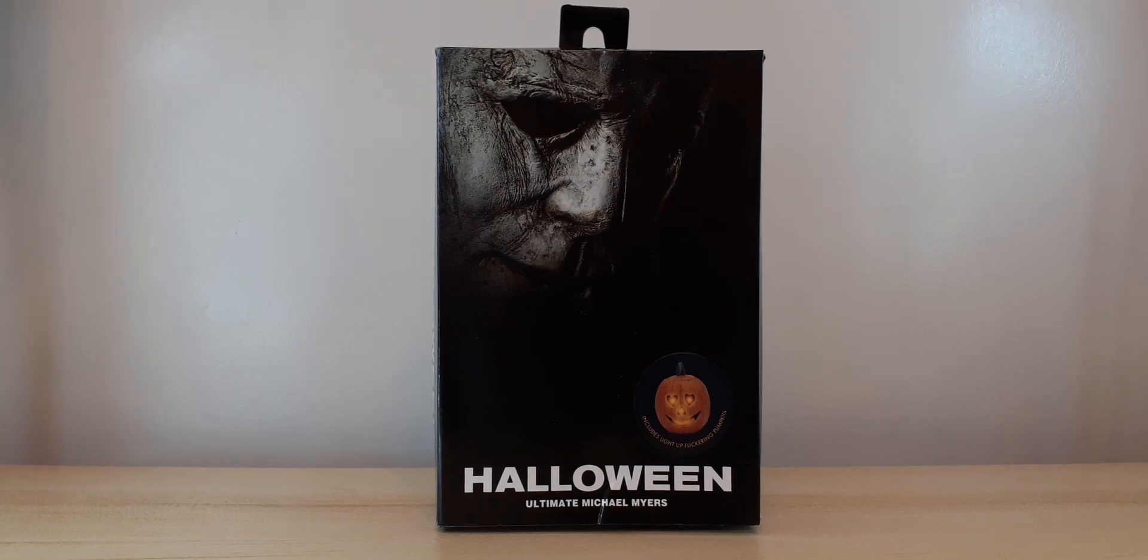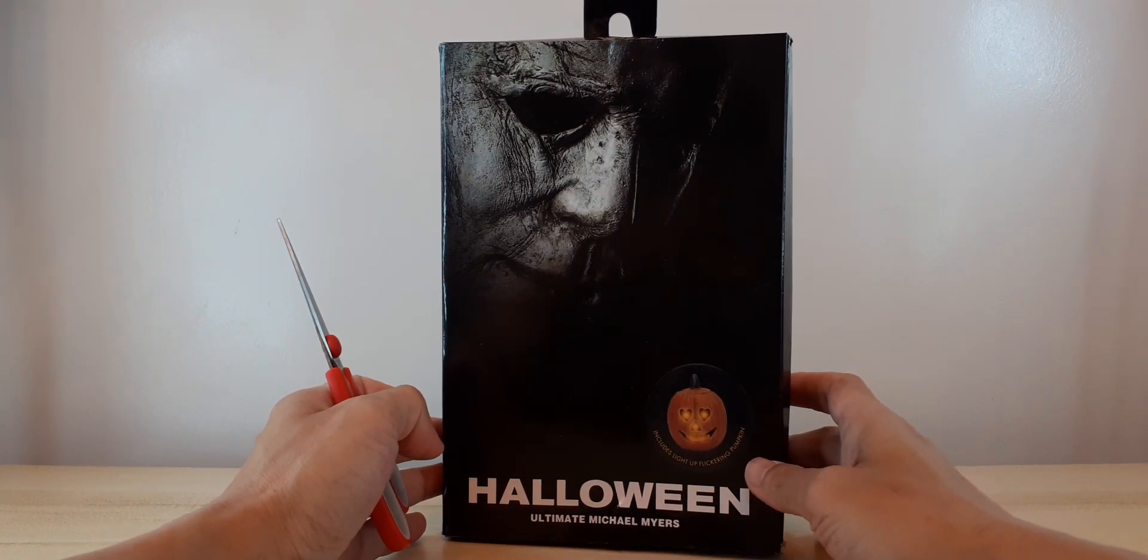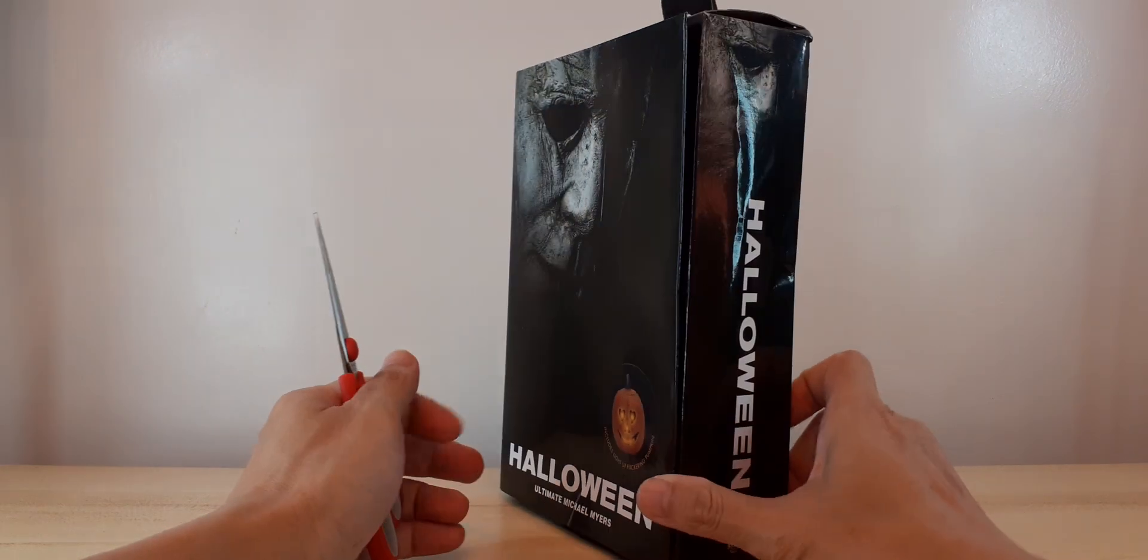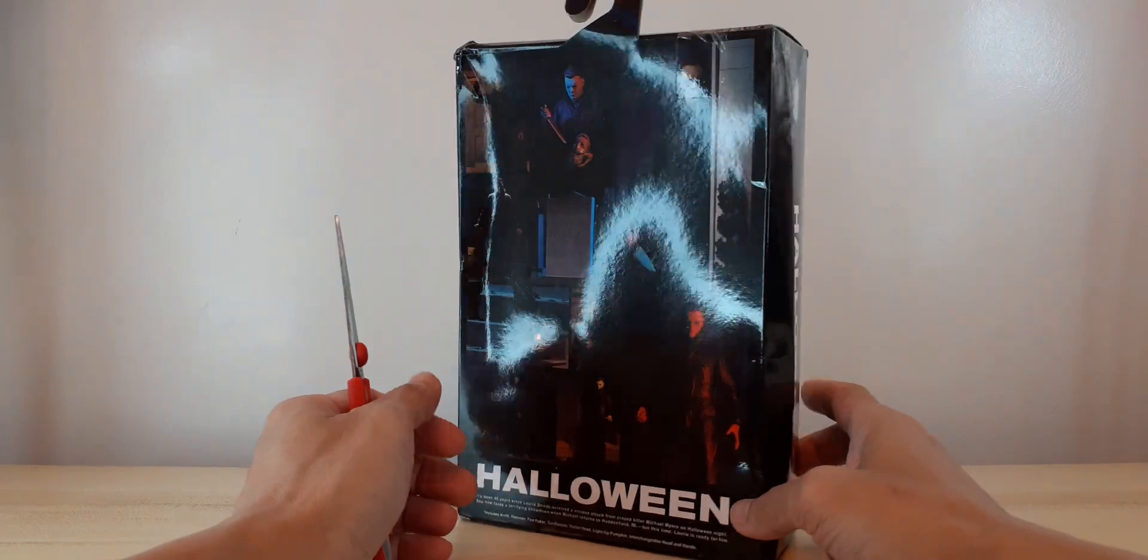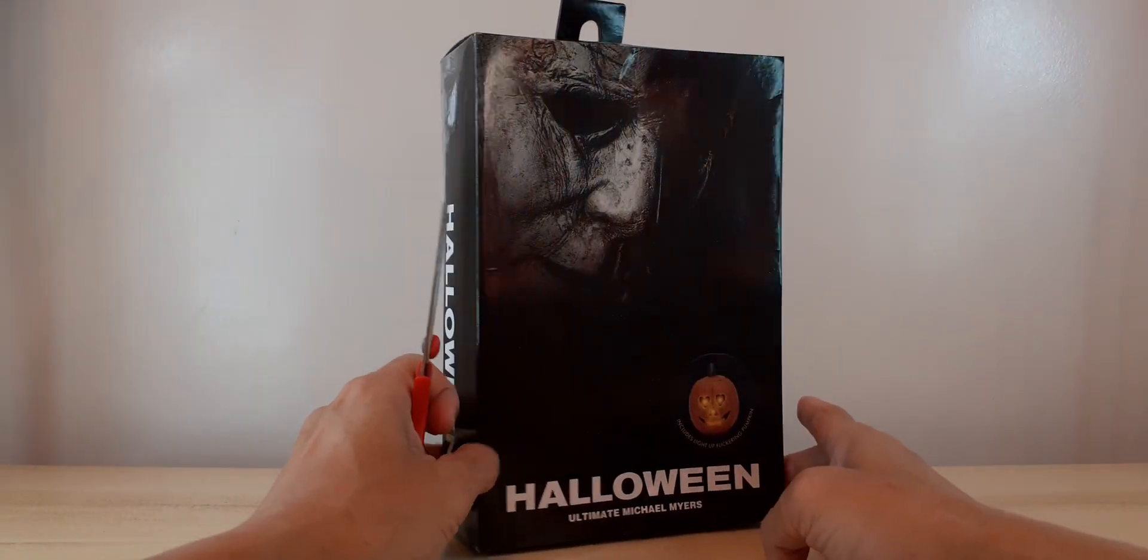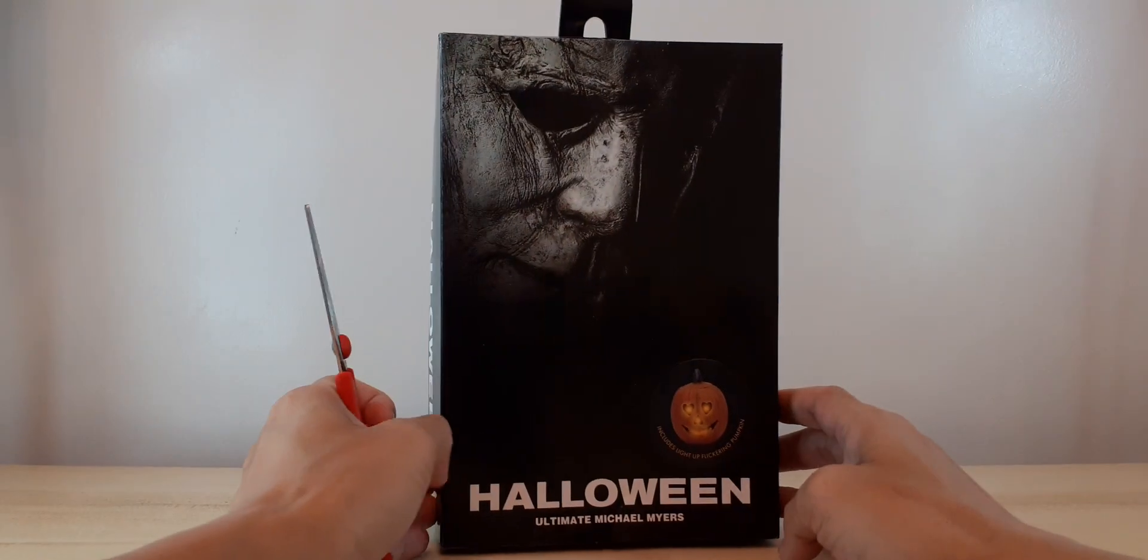Hi guys, welcome back to my channel. For today I would like to unbox this NECA Ultimate Michael Myers from the 2018 Halloween movie. This is just a bootleg copy since it's hard to find the original one, and I want to complete my Halloween horror figures of Michael Myers, Jason Voorhees, Freddy Krueger, and Chucky. So let's go.